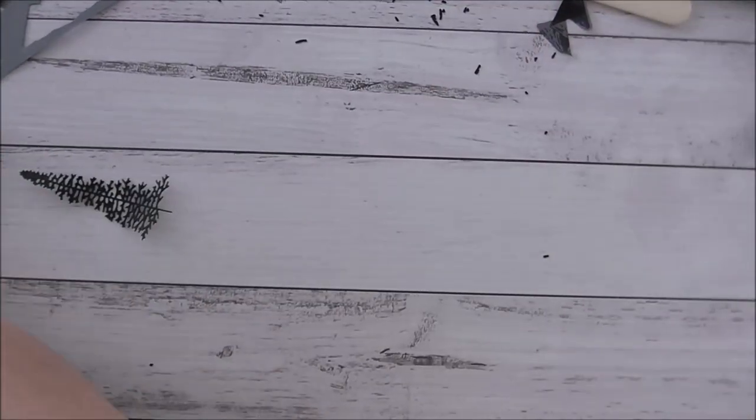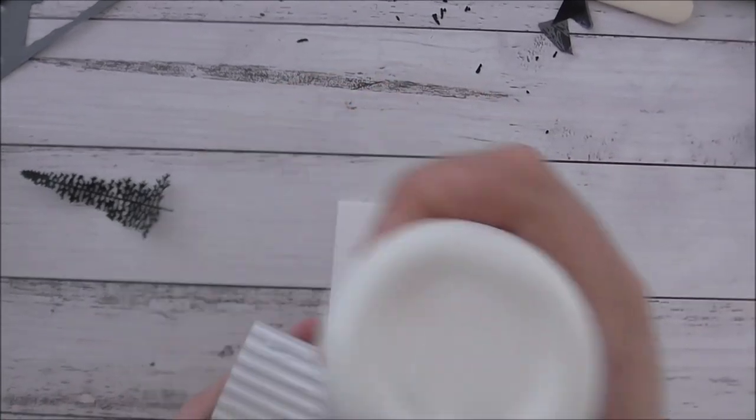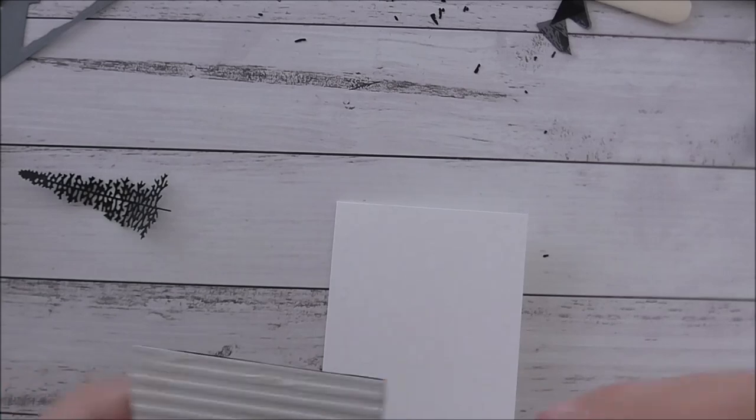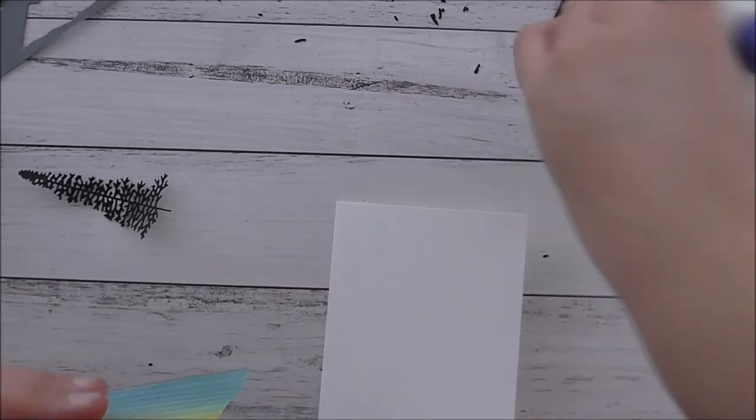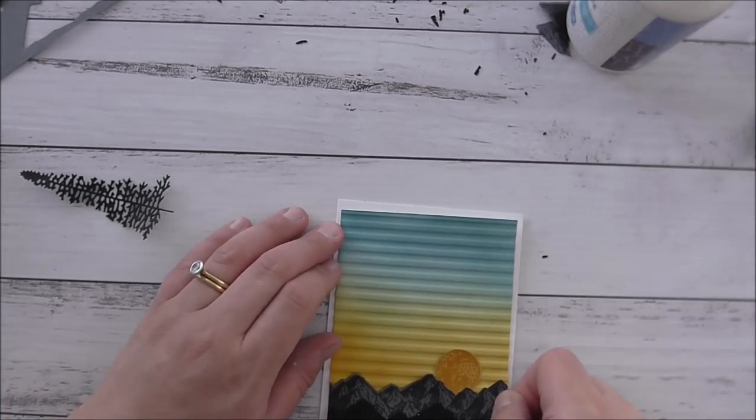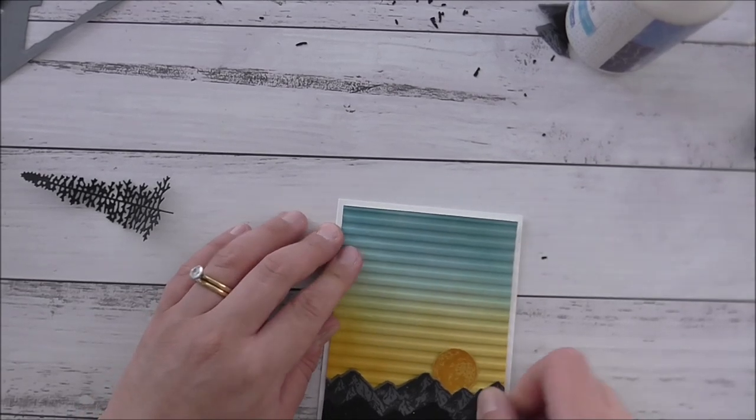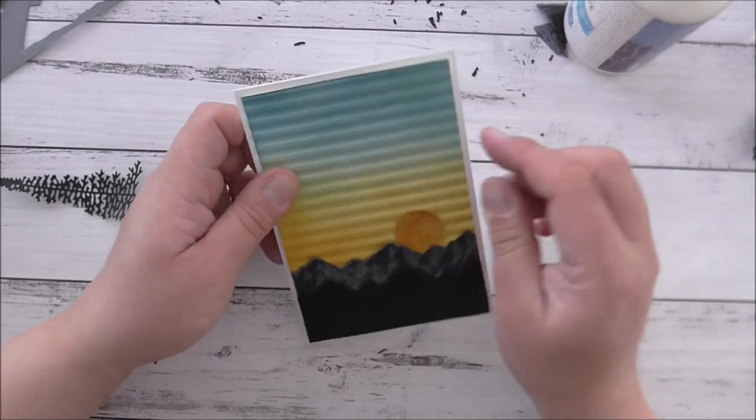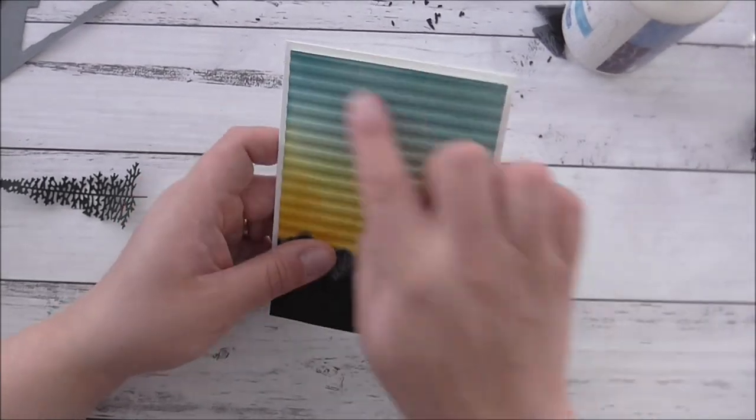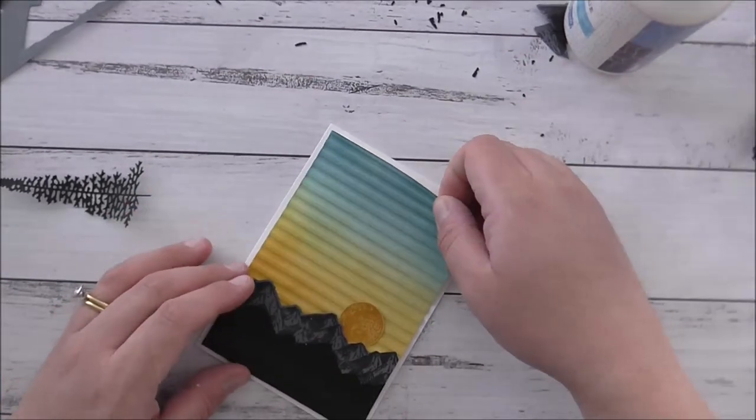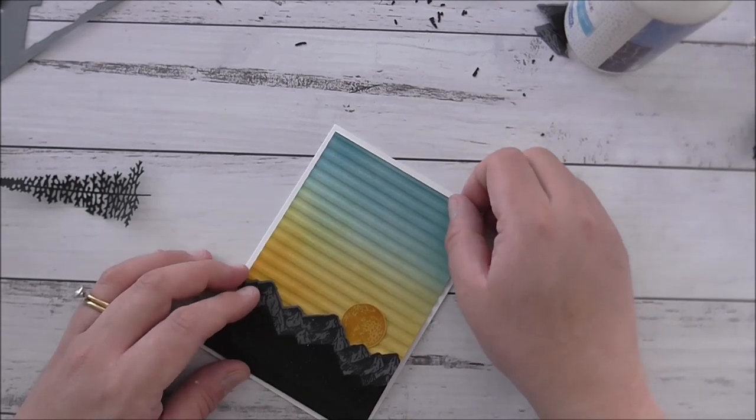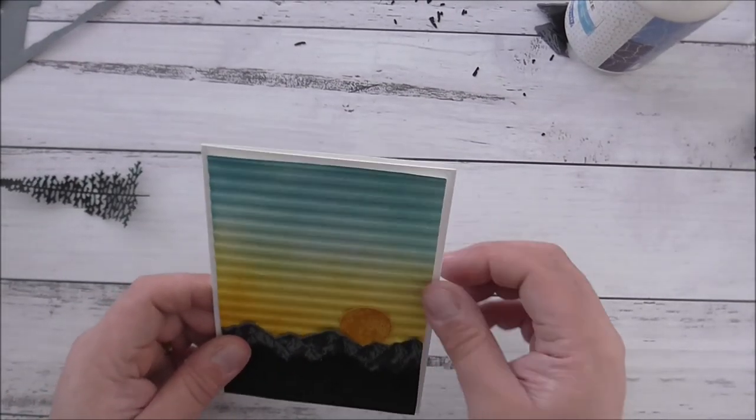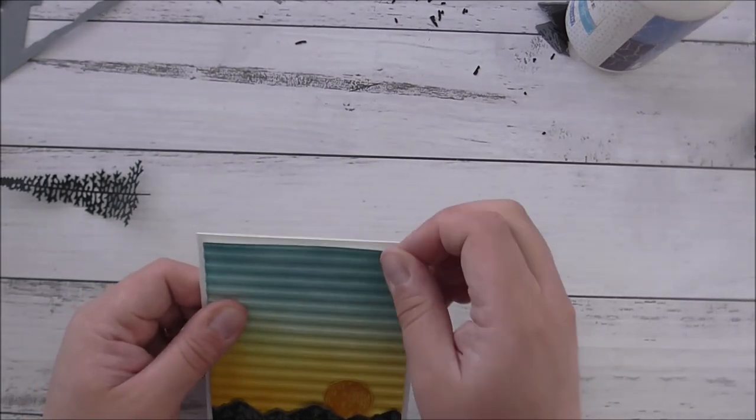I'll just take off these bits and pieces and leave that to the side. Now I can grab my card base and I'll just put some more glue and I'll stick that on the front. That looks fabulous. I love the way that's turned out, really pretty. It will give me enough room as well to put a sentiment up here if I want to, or over here, whichever way I see fit.